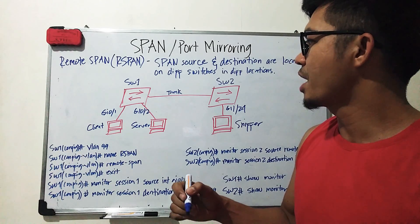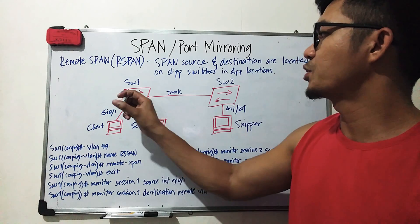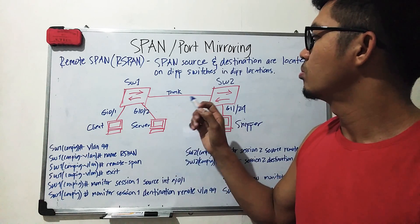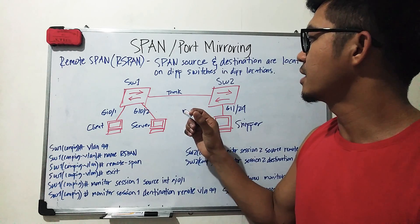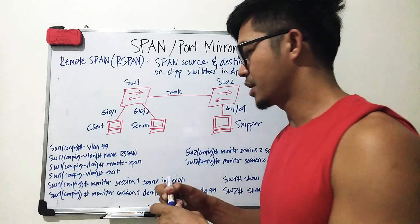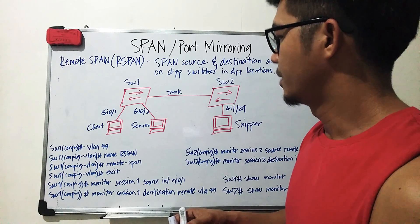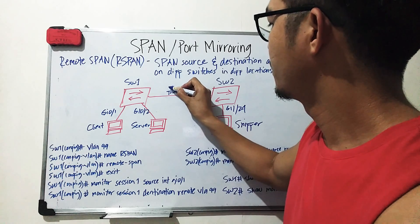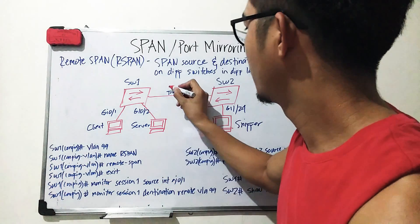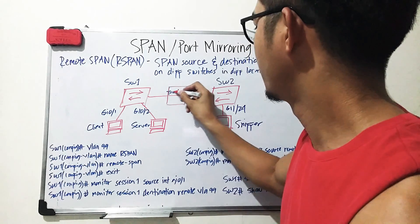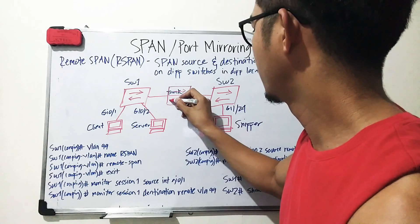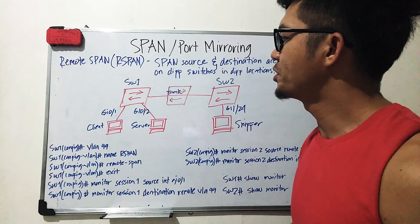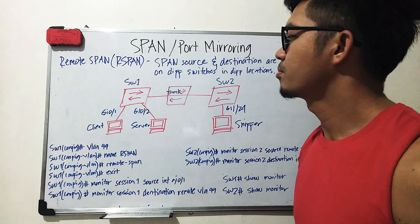Here we have a topology with Switch 1 and Switch 2. Let's imagine that these switches are located in different locations. There could be another switch in between — just to make things simple, I'm showing two switches. These switches are connected using trunk ports.